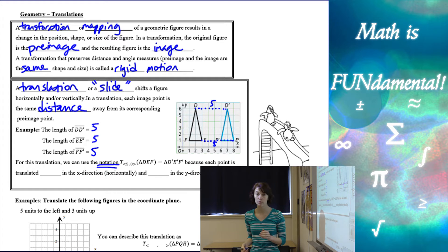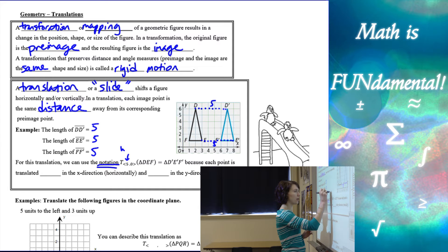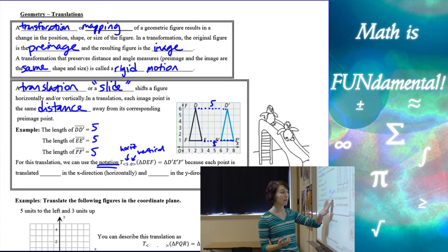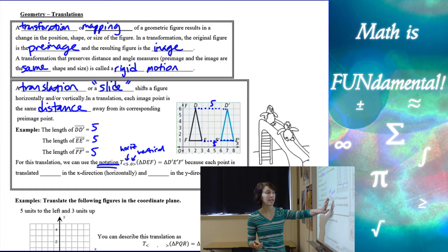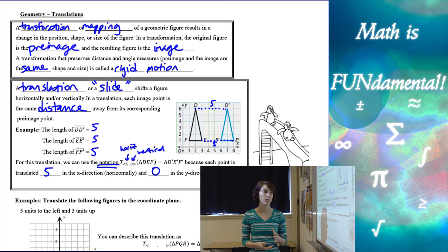Notation is very important when we talk about transformations. Our notation for a translation, we use the large capital T, and then we have arrow brackets in a sub-arrow bracket format. And this is going to be our horizontal and our vertical amounts that the figure moved. And then we have our pre-image equals our image. So T and then 5, 0 of triangle DEF equals triangle D prime E prime F prime. And this is stating that each point is translated 5 in the x direction, or horizontally, and 0 in the y direction vertically, because it didn't move up or down.